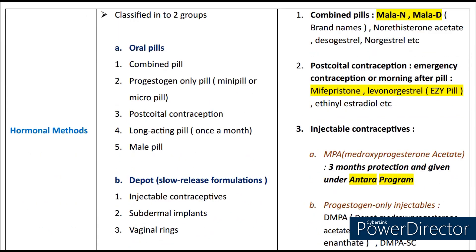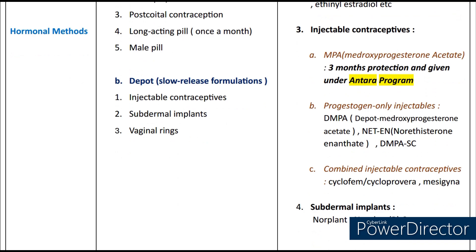Coming to hormonal methods, they are classified into two groups: oral pills and DPOT or slow-release formulations. Under oral pills, we have the combined pill, progestogen-only pill (mini-pill or micro-pill), post-coital or emergency contraception, long-acting pill (once a month), and the male pill. Under DPOT or slow-release formulations, we see injectable contraceptives, subdermal implants and vaginal rings. Examples of combined pills include MALA-N and MALA-D. For emergency contraception (morning-after pill), important examples are Mifepristone and Levonorgestrol. Injectable contraceptives include MPA (medroxyprogesterone acetate), which gives three months' protection and is given under the Antara program; others include DMPA, Cyclofem, Cycloprovera and Mesigyna. Examples of subdermal implants include Norplant and Norplant R2.